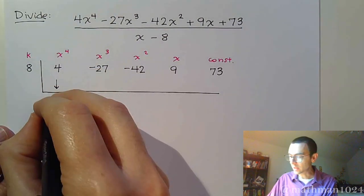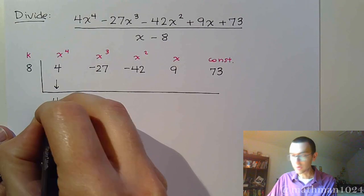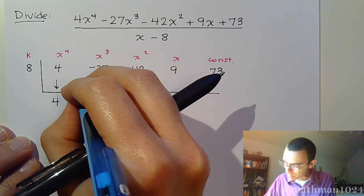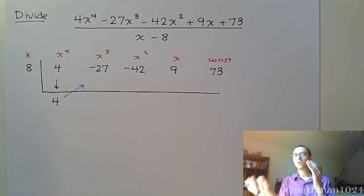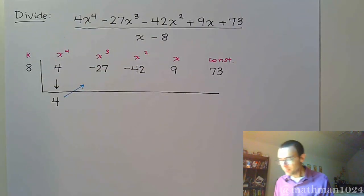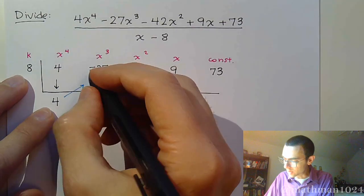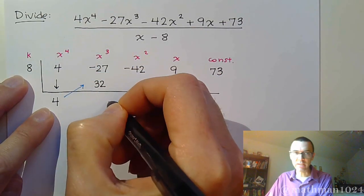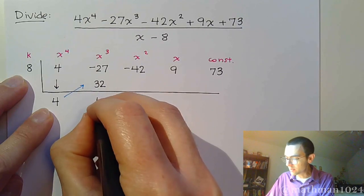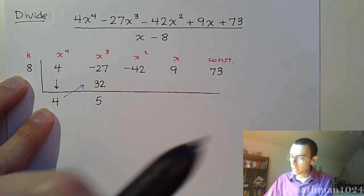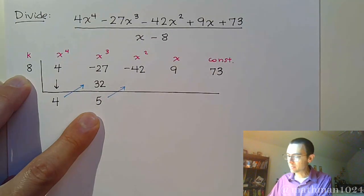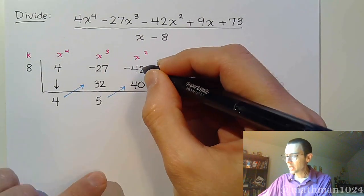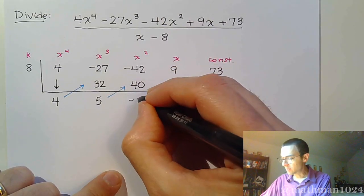The first thing you do is bring down that lead coefficient. Just bring down, in this case, the 4. And then it becomes multiply and add. Just go back and forth, multiply, add, multiply, add. 8 times 4 is 32. Combine these guys, negative 27 to positive 32 is 5. Multiply the 5 times the K value of 8. That gives us 40.